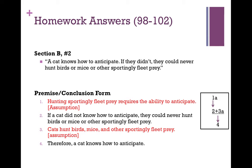This one was a little complex. The real answer, I think, is even more complex than what the book provided. There are two assumptions this argument is making. What is absolutely essential — the most essential assumption — is actually number three. But sometimes it's good to list other assumptions as well, because in this case you might think: I don't know that hunting sportingly fleet prey requires the ability to anticipate. Maybe you could reject that assumption, and that could be a reason to identify it, because you might take issue with it.